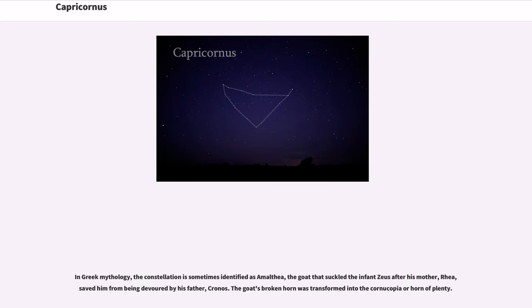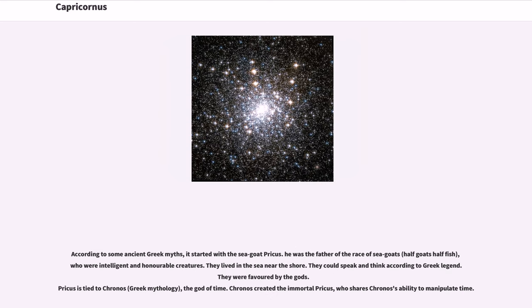In Greek mythology, the constellation is sometimes identified as Amalthea, the goat that suckled the infant Zeus after his mother, Rhea, saved him from being devoured by his father, Kronos. The goat's broken horn was transformed into the cornucopia or horn of plenty.